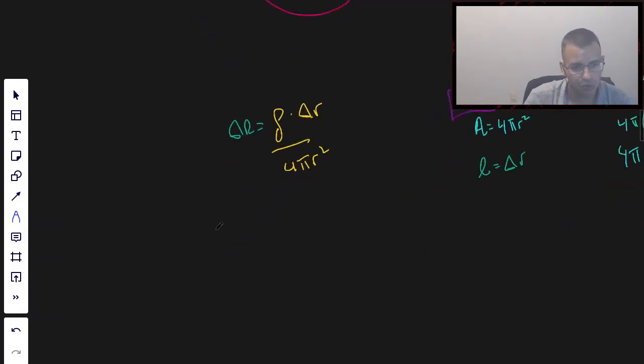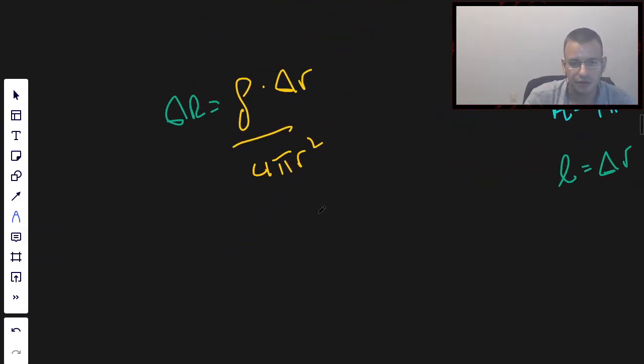And so, to get the total resistance here, we're going to integrate from A to B. So, that will give us a total big R. I'm going to factor out the constants, which is rho and 4π. This gives us R to the negative 2. I'm going to convert delta R to a dr, just to show you that we're going from a small section to an infinitesimally small.